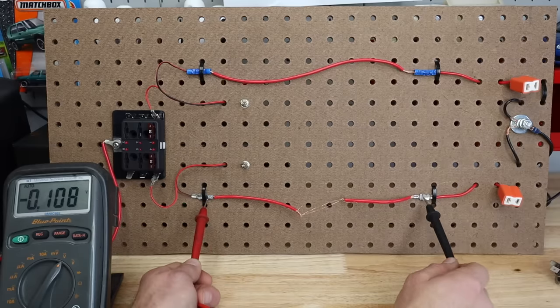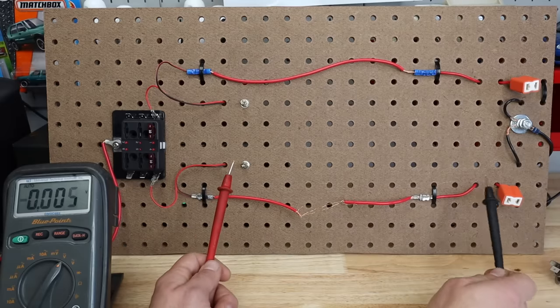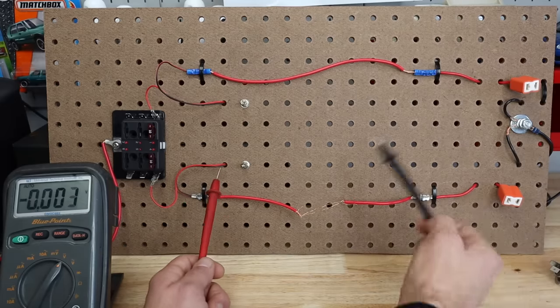Volt drops on the positive side can be things like the component doesn't work at all or the bulb is super dim. Ground side can cause really weird squirrely issues including the ones I just mentioned.